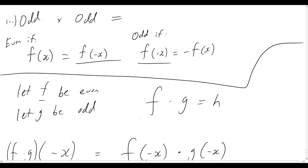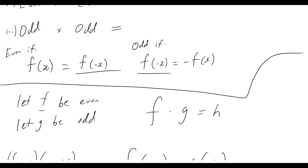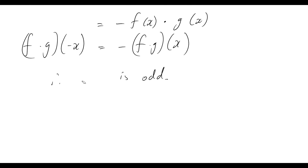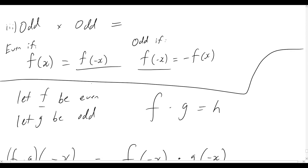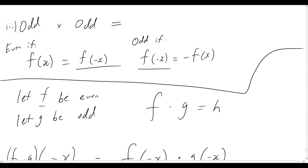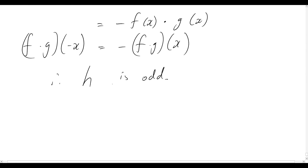That satisfies the condition for an odd function. Since f·g equals h, the resultant function h must be odd. So that's our first case: when multiplying an even and an odd function, the result is an odd function. Now let's look at the next case: even times even.